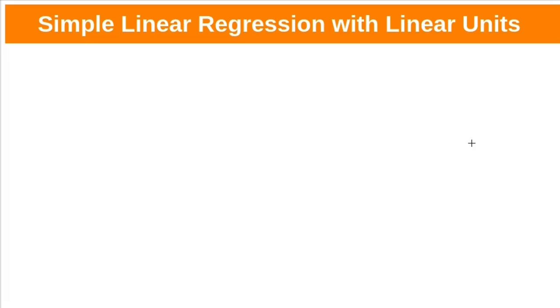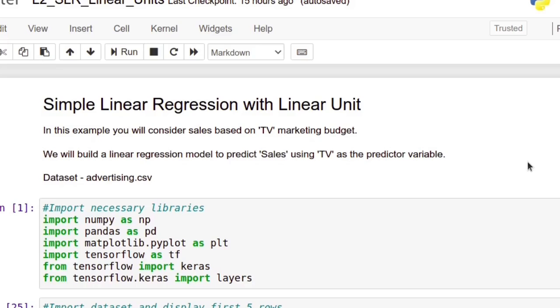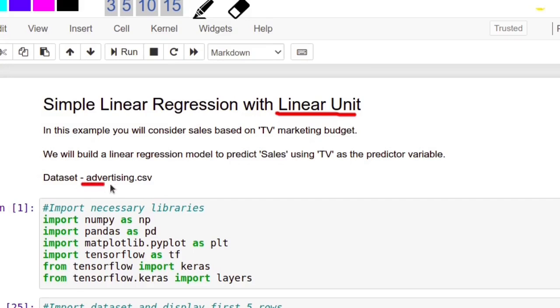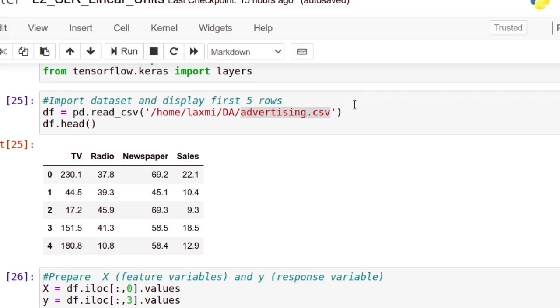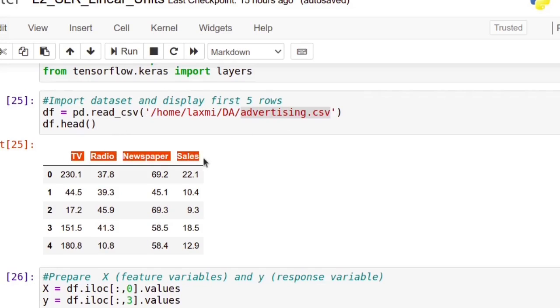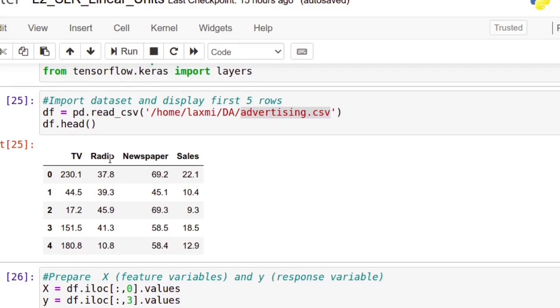Let us see simple linear regression with single neuron. We have already seen this example in our data analytics class. There we have used stats models to build linear regression. Here we are going to use neural networks. We want to predict the sales based on TV marketing budget. Let us build linear regression model with linear unit. Linear unit means single neuron without any non-linear activation function. This kind of linear units can capture only linear relationship among data. We are using advertising dataset. After reading the dataset, you can see first five rows. Here we have four columns, three independent variables: TV budget, radio budget and newspaper budget, and dependent variable sales.